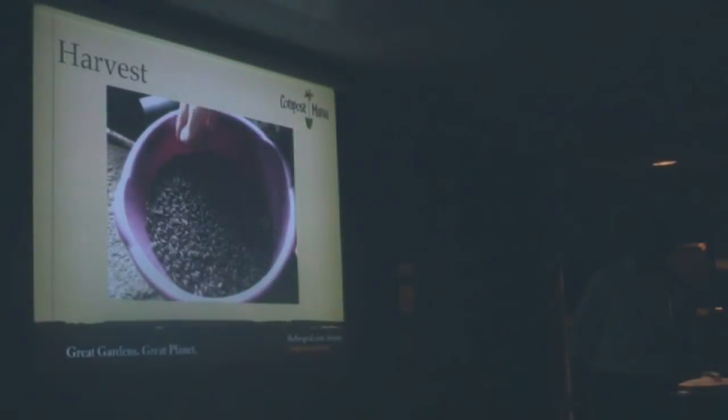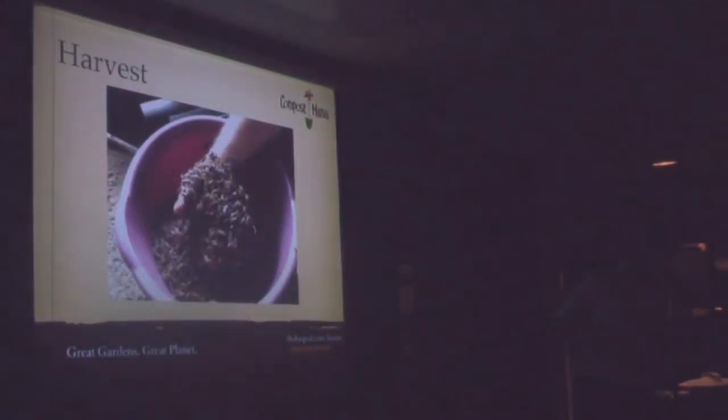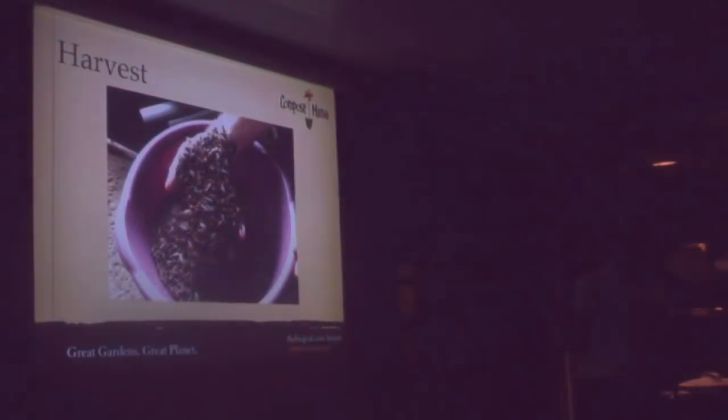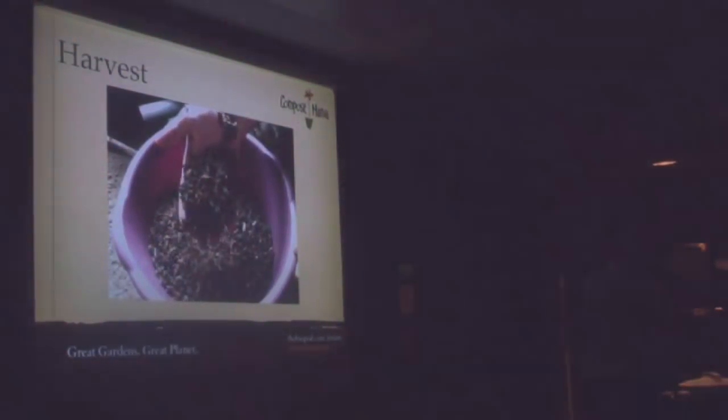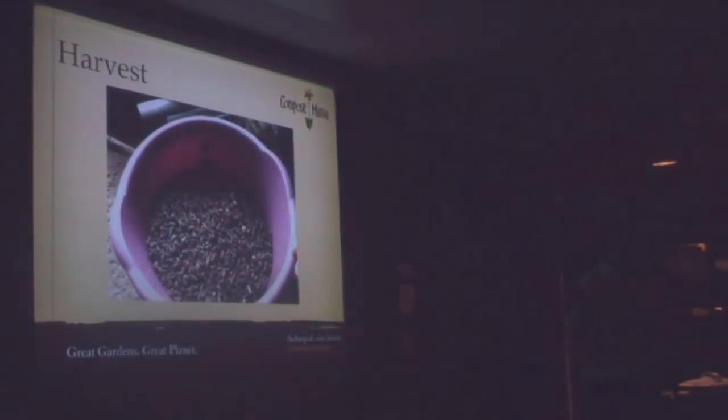This is what it looks like. What you're seeing is live grubs that are self-harvested. They change color. They no longer have a mouth part. They're completely safe to the touch. Also, one thing that they do is they produce kind of a natural antibiotic. They self-clean themselves before they pupate.